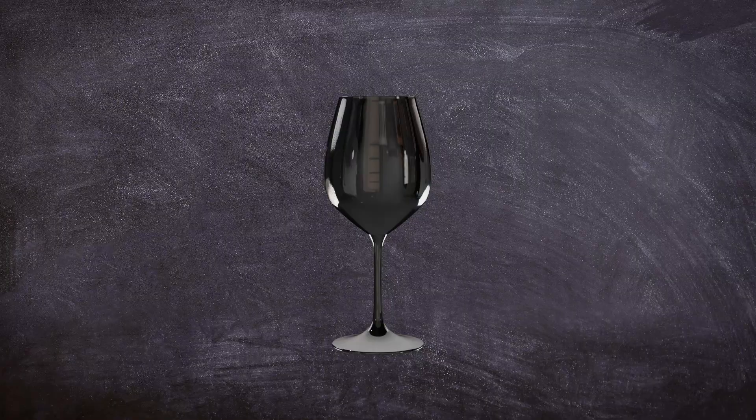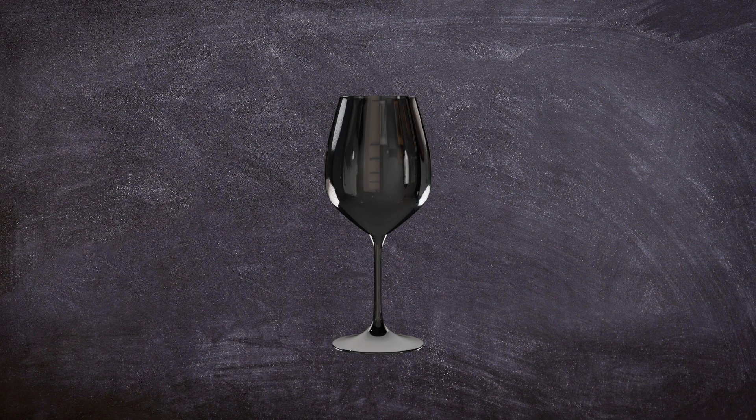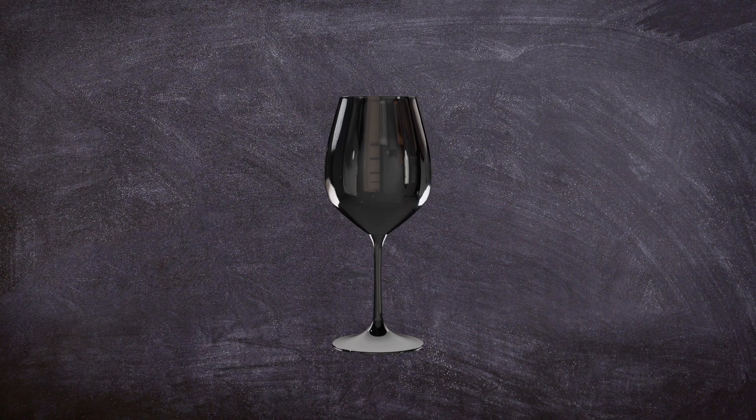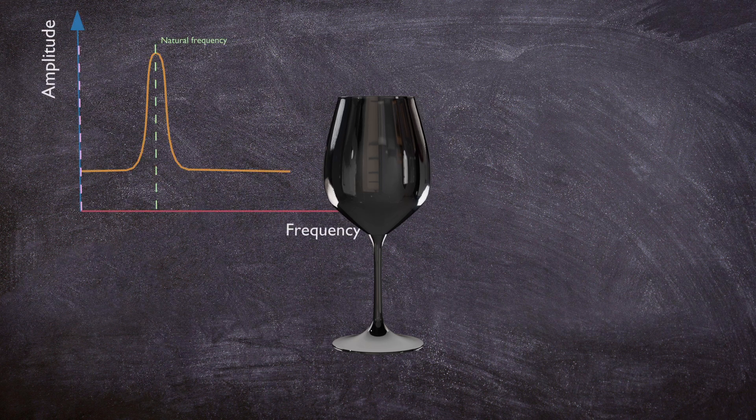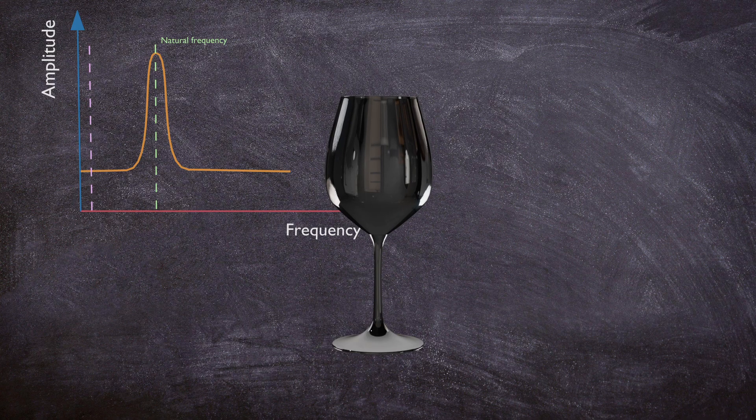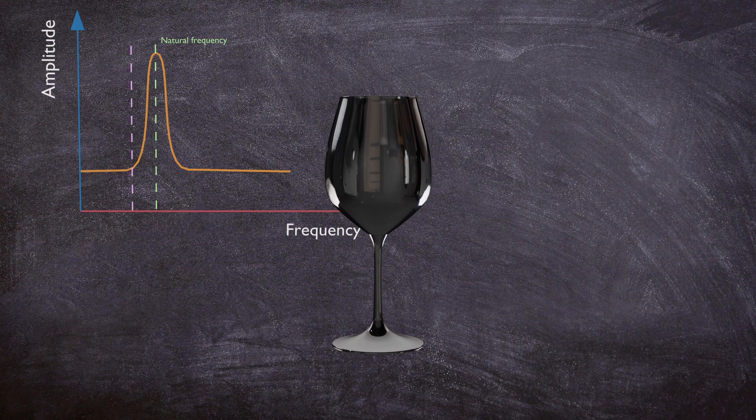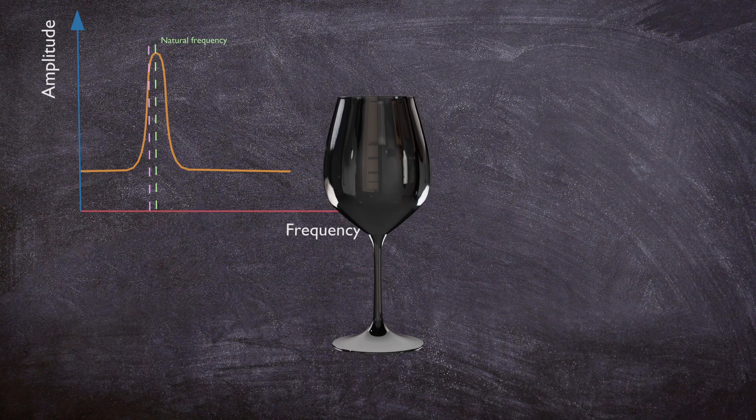Resonance failure in physics and engineering occurs when an object is subjected to periodic forces that match its natural frequency, causing it to oscillate with increasing amplitude until it fails. This phenomenon happens because the external force continuously adds energy to the system at a frequency that aligns with the object's inherent vibrational frequency, causing it to resonate. As the oscillations amplify, they can exceed the material's strength or the structure's ability to absorb the energy, leading to catastrophic failure.